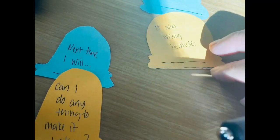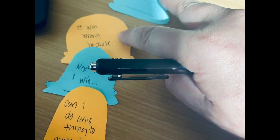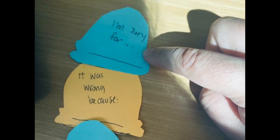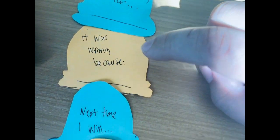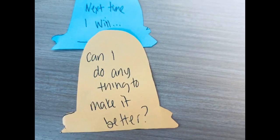So once you're done you can stack them and see that you have a really big ice cream cone. So if you were to say this out loud you would say 'I'm sorry for, it was wrong because, next time I will, and can I do anything to make it better.'